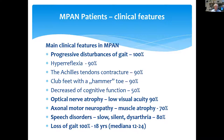In most patients we observed optic nerve atrophy with low visual acuity. And during the progress of disease, we observed axonal motor neuropathy with muscle atrophy in 70%. Speech disorders — slow, silent, and dysarthria — were observed in 80%. Loss of gait in 100% of patients after 18 years of life.